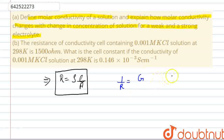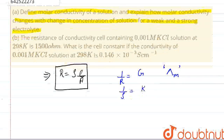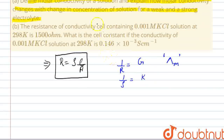If we talk about molar conductance, it is represented by λM. We have resistivity, and we will express it in terms of conductivity: 1/ρ equals conductivity, represented by K. We will derive the formula and then define molar conductivity.